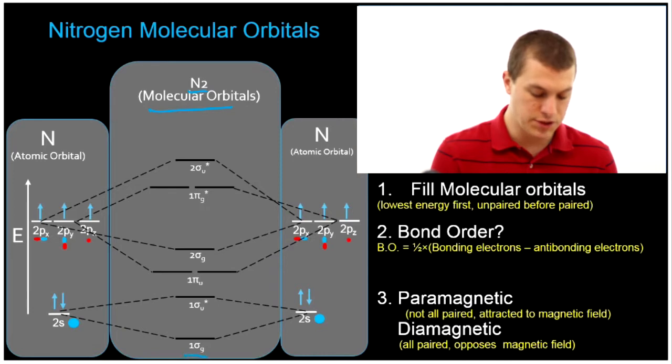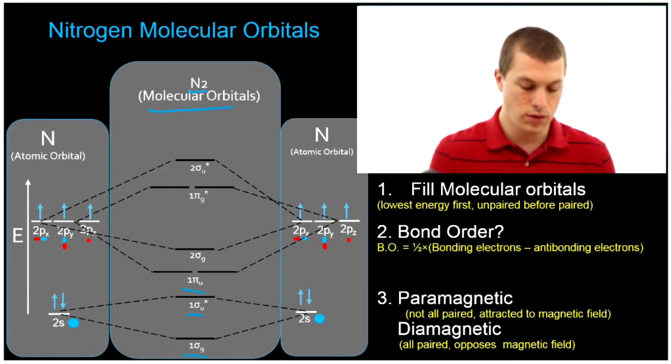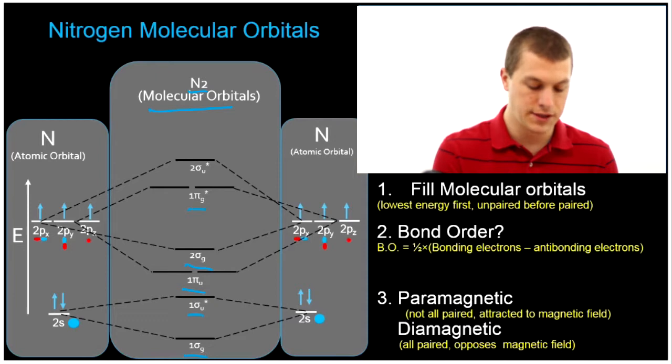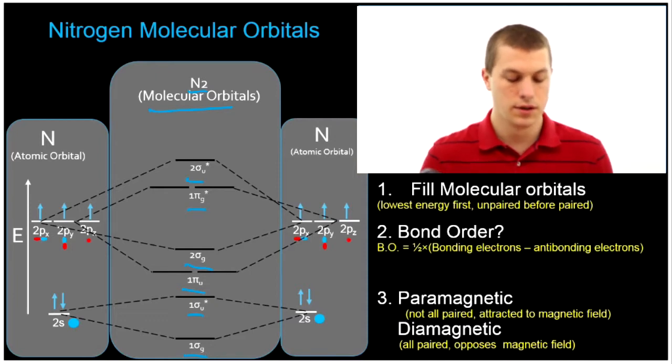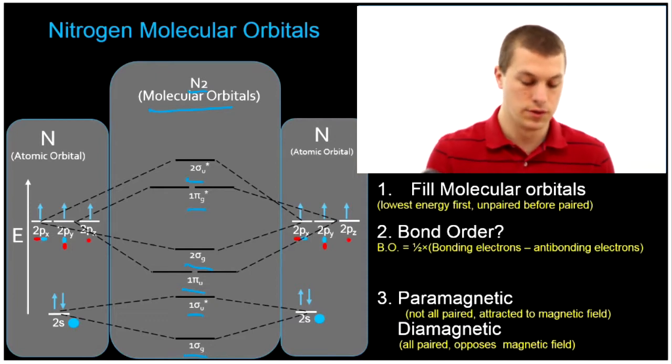They start with 1 sigma g, then they go to 1 sigma u, then they go to 1 pi u, 2 sigma g, 1 pi g star, and 2 sigma u star.